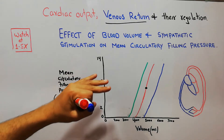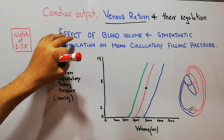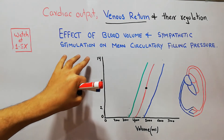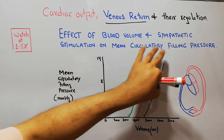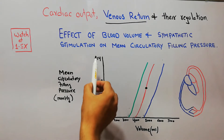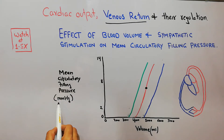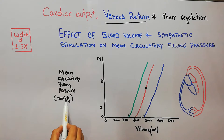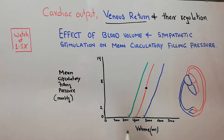We are going to discuss the effect of blood volume and sympathetic stimulation on mean circulatory filling pressure with the help of a graph. The mean circulatory filling pressure is plotted on the y-axis in millimeters of mercury, and the volume of blood is plotted on the x-axis.